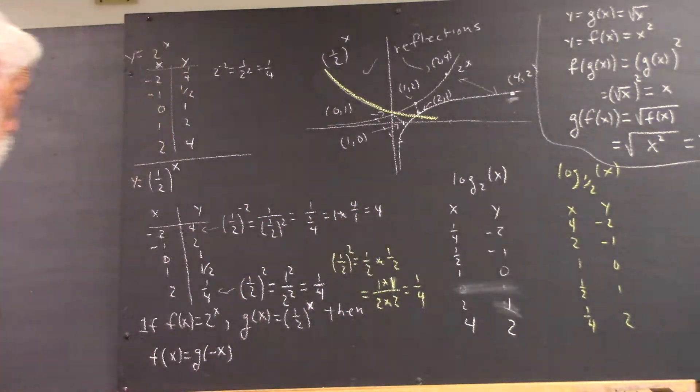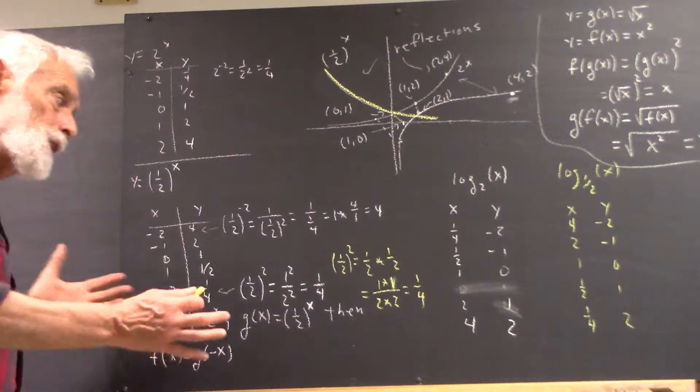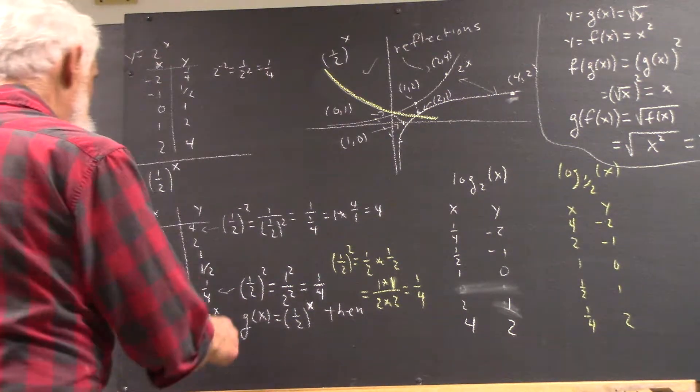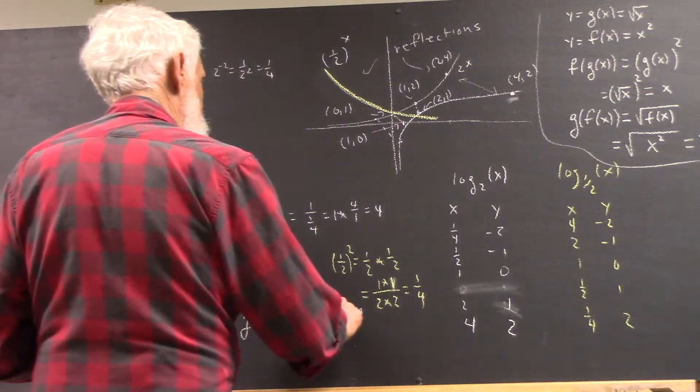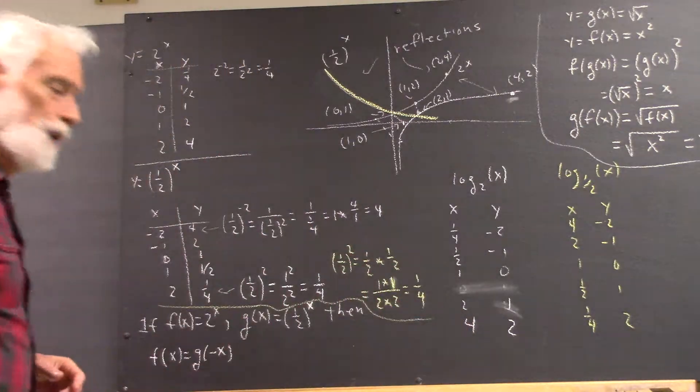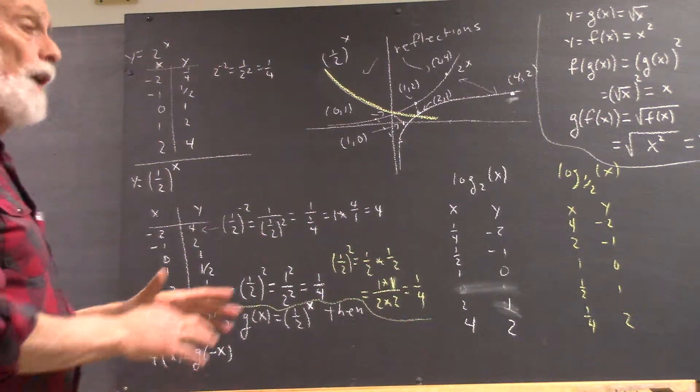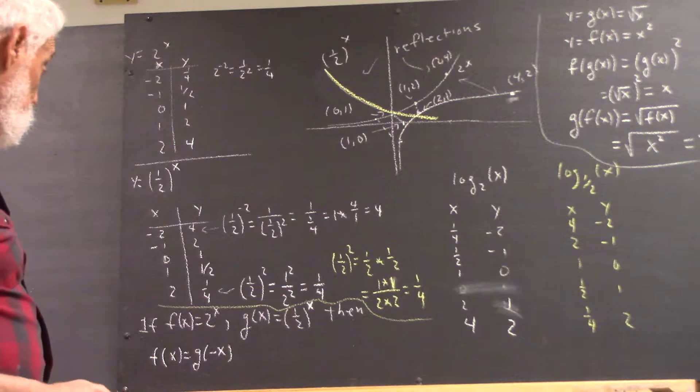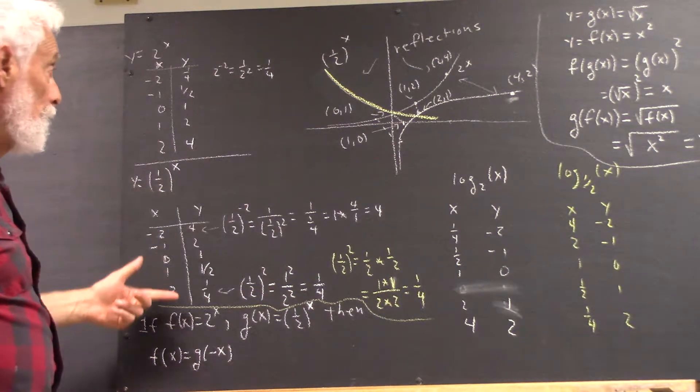1 divided by 1 fourth means 1 times the reciprocal of 1 fourth. And that, of course, is 4. Now, that's basic arithmetic. We really need to get any uncertainty about basic arithmetic out of our systems. Okay? So there it is.